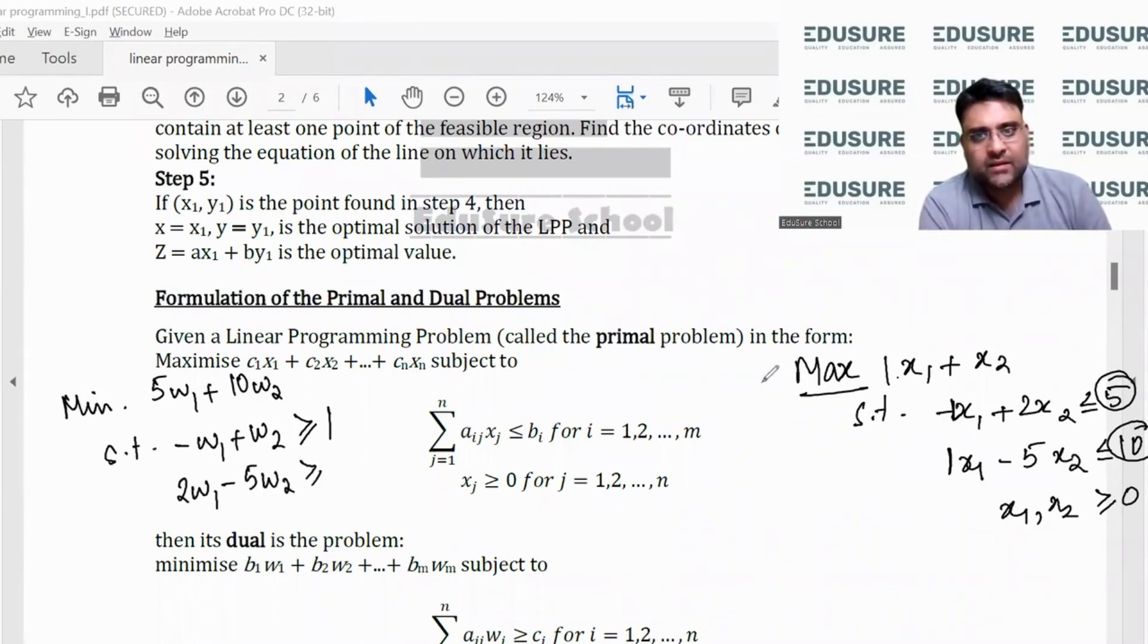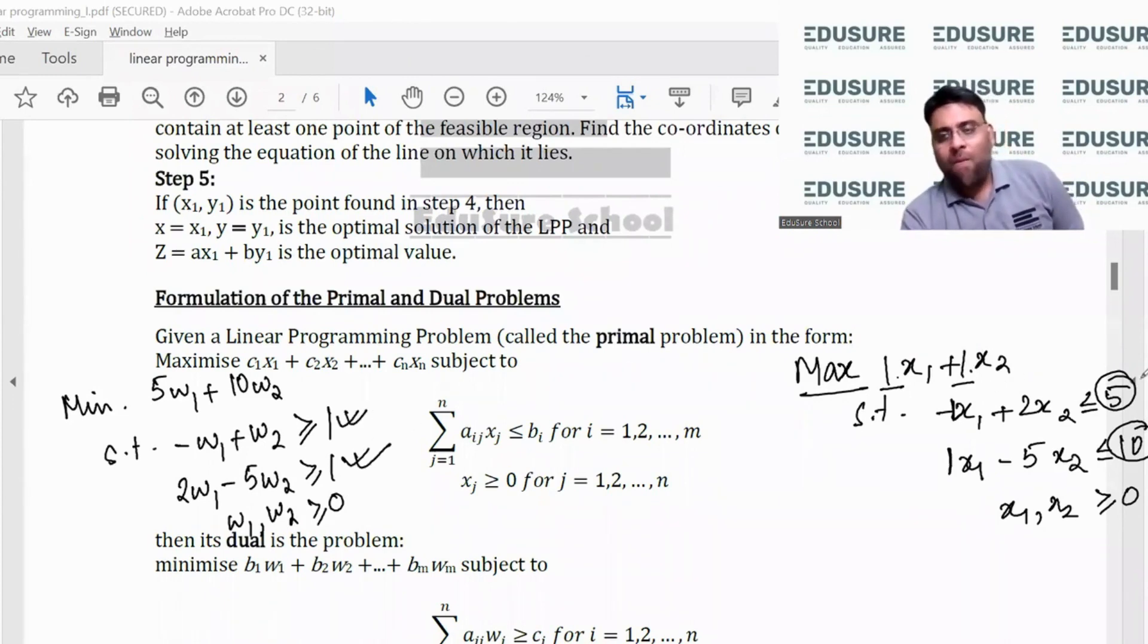2w1 minus 5w2 greater than equal to 1, and w1, w2 greater than equal to 0. So what happens is the coefficient of x1 and x2 which is there in the primal becomes the constant in the constraint, and the constant in the constraint comes in the objective function for the dual. Here I basically take the transpose. It's minus 1 and 2, 1 and minus 5, now it becomes minus 1 and 1, 2 and minus 5. Less than equal to becomes greater than equal to. Simple.